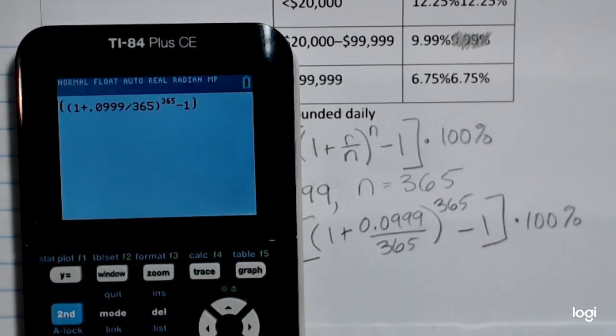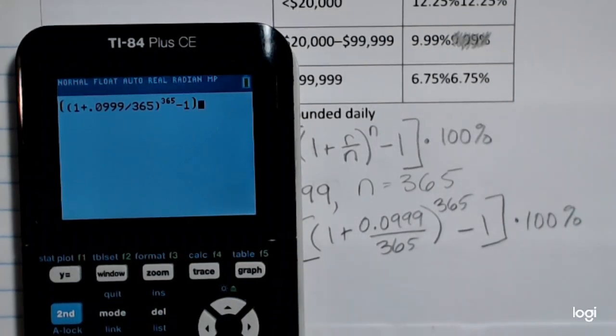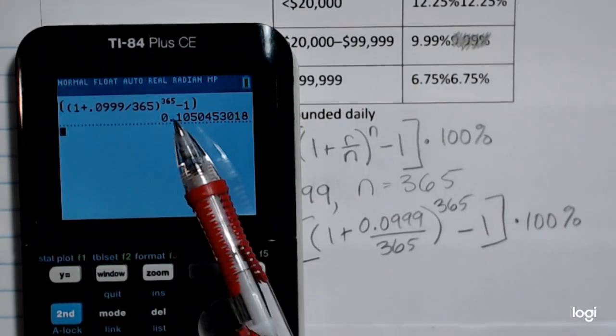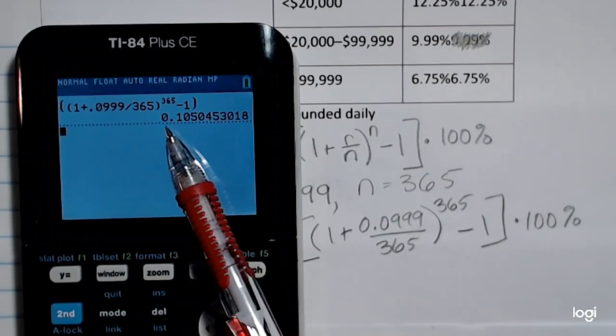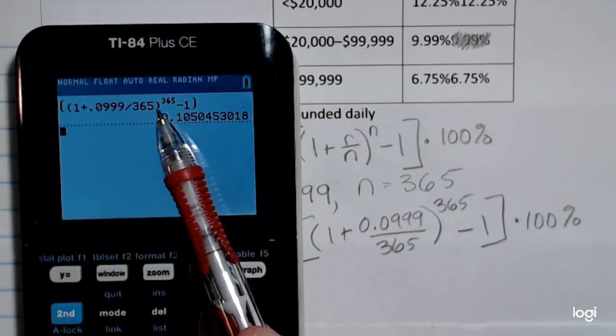So if I push enter here... does that look right? No. Okay, better. As a decimal, I get 0.105. So this is the effective annual yield as a decimal.